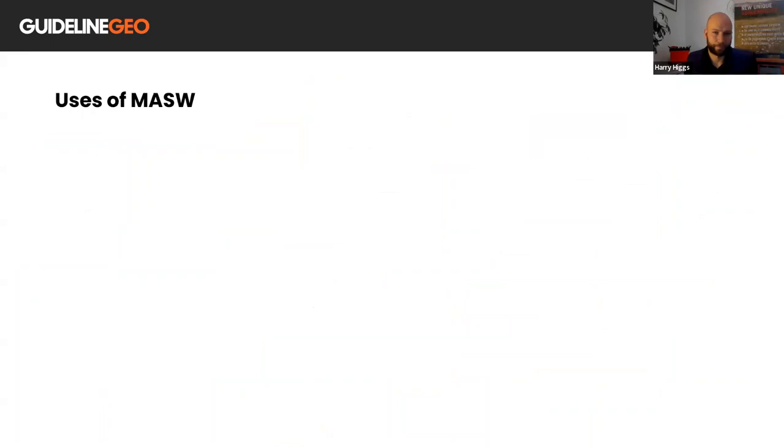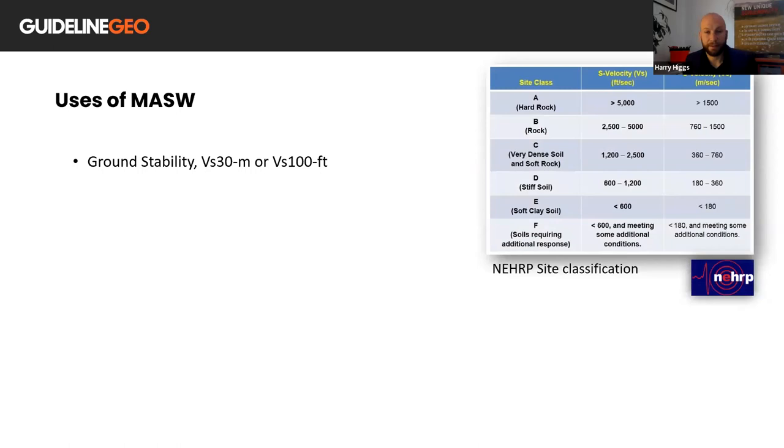So what are the typical uses of modern MASW methods? The VS-30 in Europe, or VS-100 in the United States, relates to seismic site classification, which is recognized by the National Earthquake Hazard Reduction Programme, NEHRP. In short, shear wave studies are used to inform building design and mitigate the risk from earthquakes.